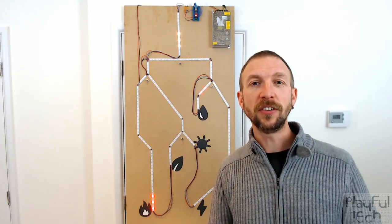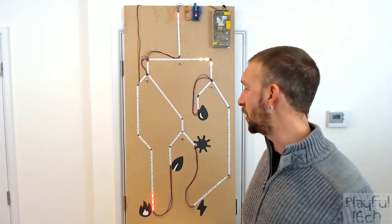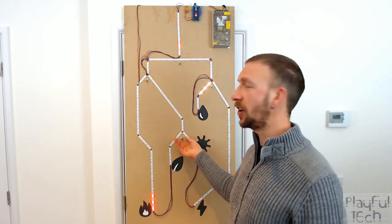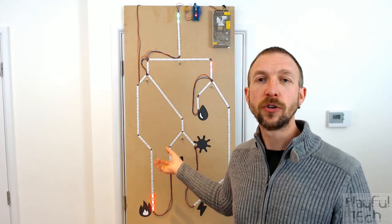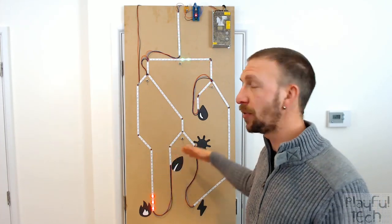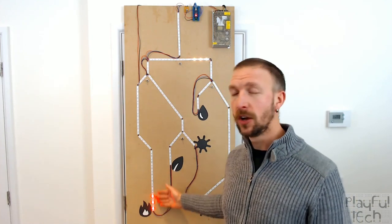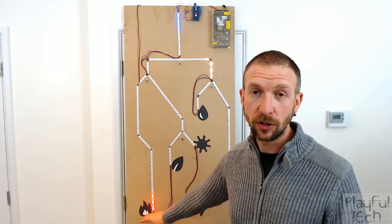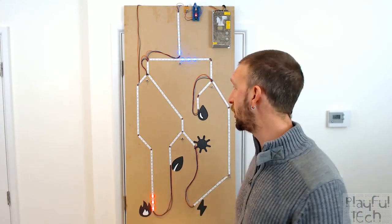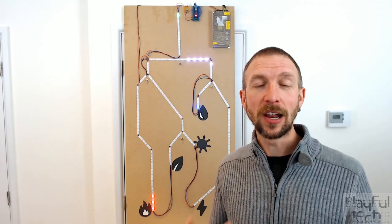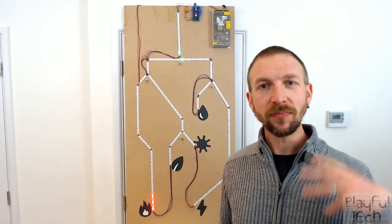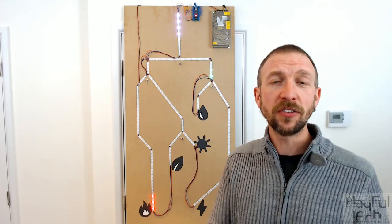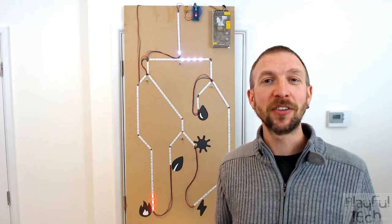There are also different ways to customise it: instead of a toggle switch between two sections of track, you could use a rotary switch with three or more different paths, and you could alter the win conditions at the bottom — just a single LED, or multiple ones, however you want. I hope that has given you some ideas and a framework on which you can develop a puzzle like this yourself. If you have any questions or comments, do please write them below and I'll do my best to get back to you.